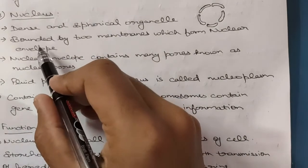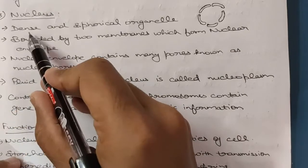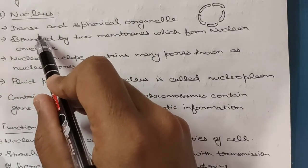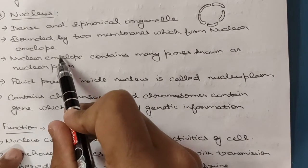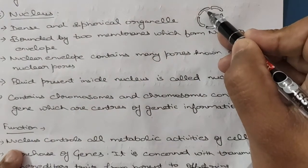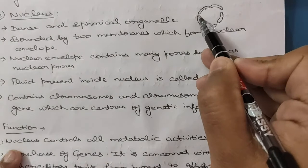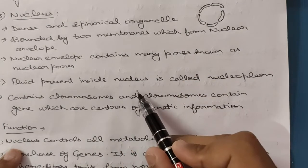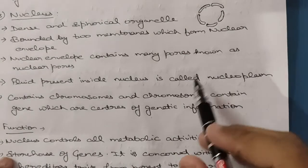The third component is the nucleus. It is a dense and spherical organelle — dense because under a microscope you will find a central spherical region that is quite dense compared to other parts, due to staining. The nucleus is bounded by two membranes which form the nuclear envelope, making it a double membranous structure. The nuclear envelope contains many pores called nuclear pores. The fluid inside the nucleus is termed nucleoplasm, to differentiate it from cytoplasm.